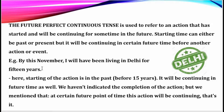Look at the example: 'By this November, I will have been living in Delhi for 15 years.' Here, the starting of the action is in the past — that is, 15 years ago. It will be continuing in future time as well. We haven't indicated the completion of the action, but we mentioned that at a certain future point of time this action will be continuing. We are talking about this November — by this November.